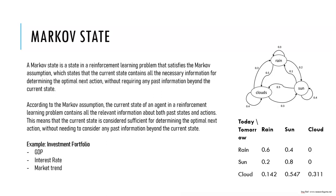Let's understand Markov state. In reinforcement learning, a Markov state is a state that satisfies the Markov assumption, which states that the probability distribution over the next state depends only on the current state and action, and not on the previous history of states and actions. For example, consider a robot navigating a grid world environment — the robot's current state could be represented by its position on the grid, and its action could be moving up, down, left, or right. If the environment satisfies the Markov assumption, then the probability distribution over the next state depends only on the robot's current position and the action it takes, not on its previous positions or history of actions.